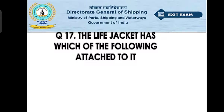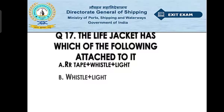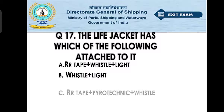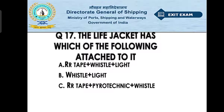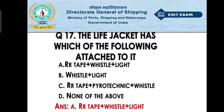Question number seventeen: the life jacket has which of the following attached to it? Option A: retro-reflective tape, whistle, and light. Option B: whistle and light. Option C: retro-reflective tape, pyrotechnic, and whistle. Option D: none of the above. The right answer is option A — retro-reflective tape, whistle, and light. The retro-reflective tape reflects light so the person can be easily recognized at night.